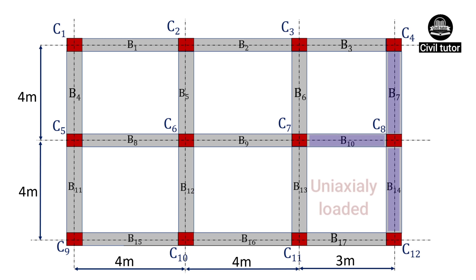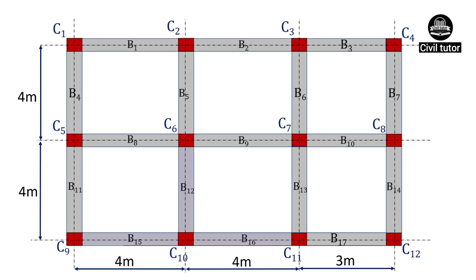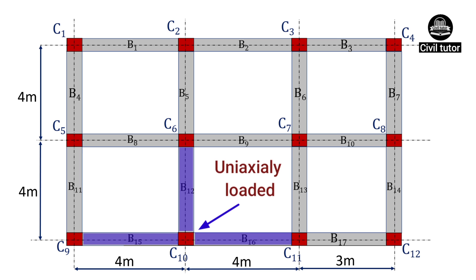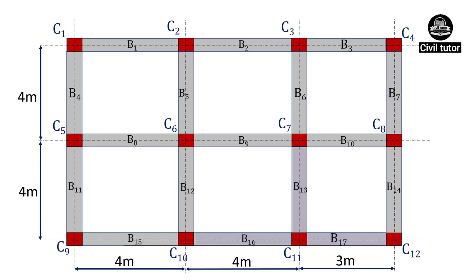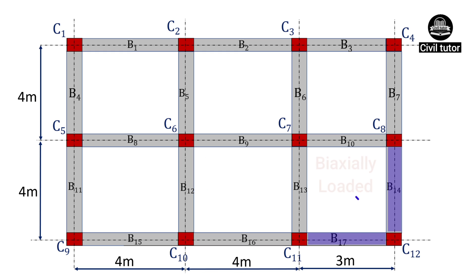Column C8 satisfies the criteria of uniaxial bending, column C9 biaxial bending, column C10 uniaxial bending, column C11 biaxial bending — as in the case of column C3 — and column C12 is a biaxially loaded column.